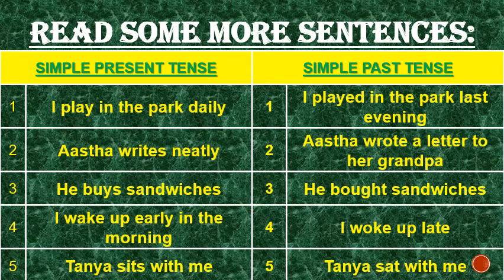Let's read some more sentences comparing simple present tense and simple past tense. 'I play in the park daily' becomes 'I played in the park last evening.' The word 'play' changes into 'played' in past tense. Next: 'Aastha writes neatly' — in past tense, 'Aastha wrote a letter to her grandpa.' So here, 'writes' becomes 'wrote.'